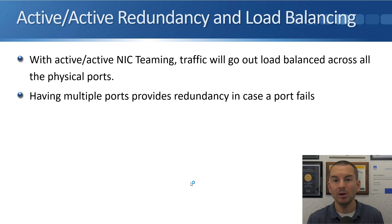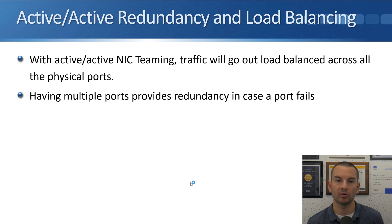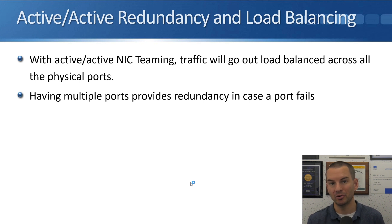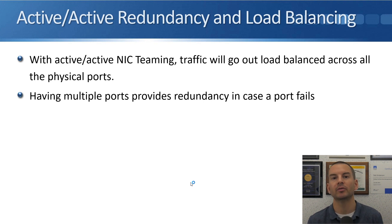With active-active NIC teaming, traffic will go out load balanced across all physical ports and you get redundancy as well. If one of the ports fails, all the traffic will go out the remaining port. With active standby you're only using one port when you've got two physical ports there. With active-active you get to use both ports — both are being actively used for traffic, giving you the load balancing and the redundancy.